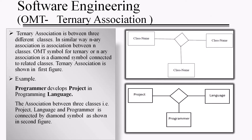Ternary association is the association between three different classes. Similarly, N-ary association is an association between N classes. The OMT symbol for ternary or N-ary association is a diamond box connected to the related classes. An example of ternary association is: programmers develop a project in some programming language, where Programmer, Project, and Language are the three classes connected by the diamond symbol.